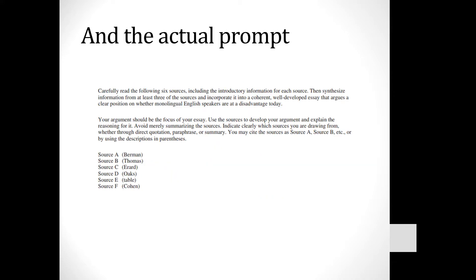The actual prompt says: carefully read the following six sources, including the introductory information for each source, then synthesize information from at least three of the sources — but go for four — and incorporate into a coherent, well-developed essay that argues a clear position on whether monolingual English speakers are at a disadvantage today. The last part explains how to cite sources as Source A, B, etc.